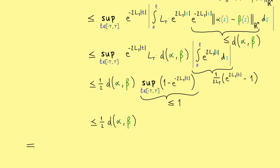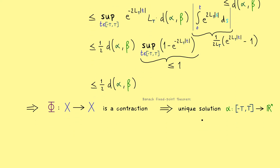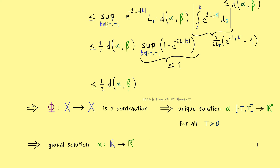That is all we needed: by the Banach fixed point theorem we get a unique fixed point and therefore a unique solution. By construction of our metric space X, this unique solution is defined on the interval [-T, T]. But the whole construction works no matter what T we choose, so we can make T as large as we want and define α on the whole real number line. This is exactly what we wanted to show, and the special version of the Picard-Lindelöf theorem is proven.